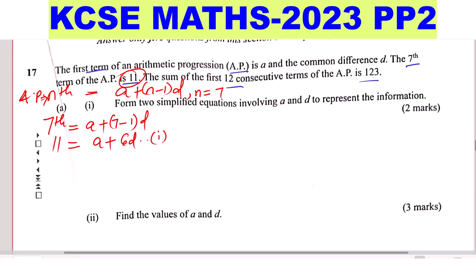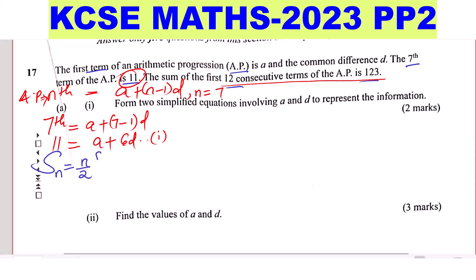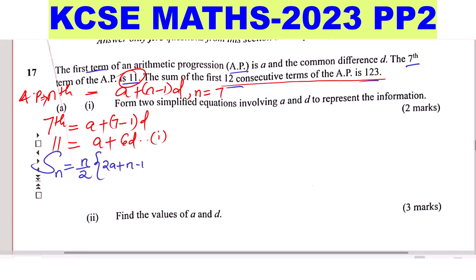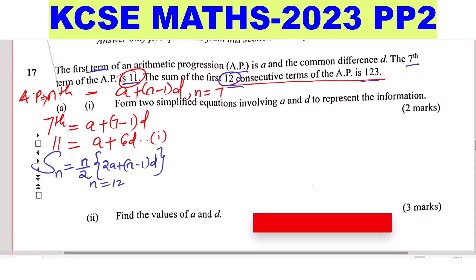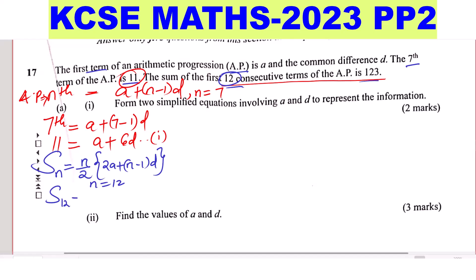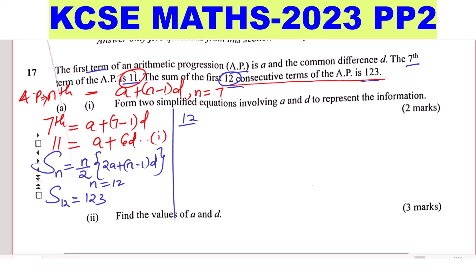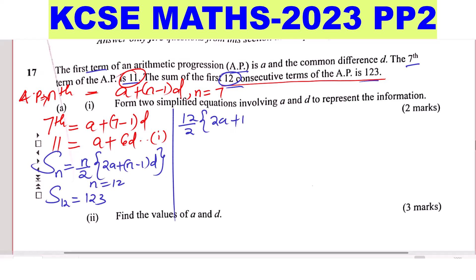The second equation comes from the sum condition. The sum of N terms of an AP is given by N divided by 2, then 2A plus (N minus 1)D. Here we have the sum of the first 12 terms, so N will be 12. Substituting: 12 divided by 2, then 2A plus (12 minus 1)D, equals 123.